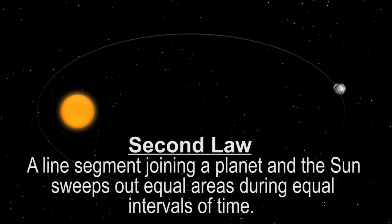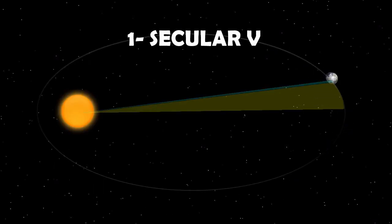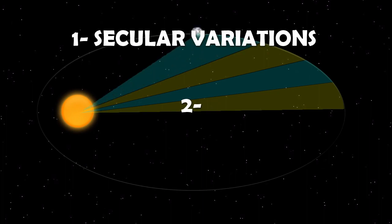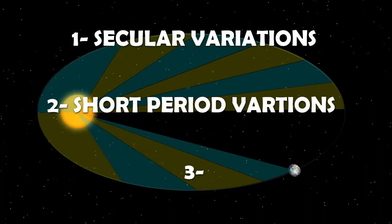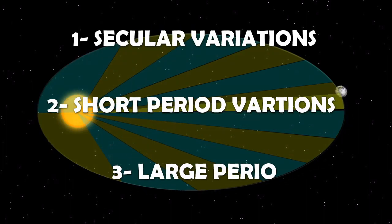Its perturbations can be classified based on how they affect the orbital elements: secular variations, short period variations, and long period variations.